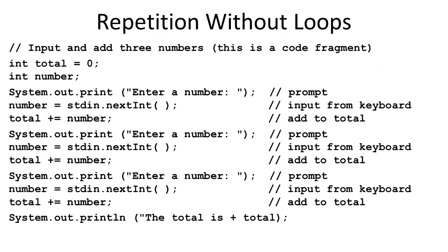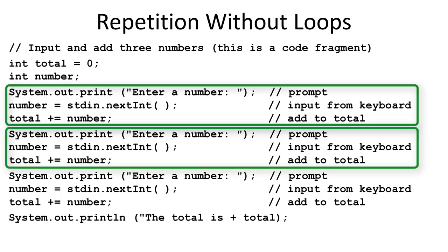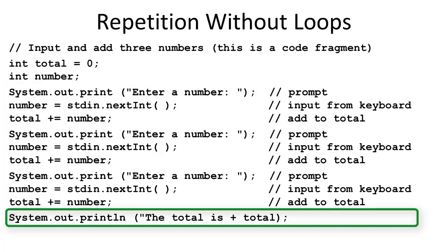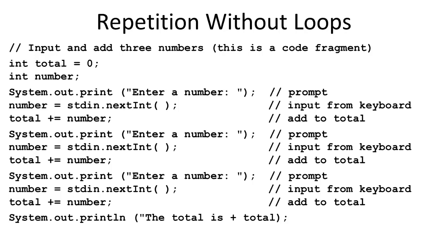Here is a program fragment — it is only a piece of a full program, missing all the extra things needed to make a program run. If you wanted to run this program fragment, you would need to add any needed import statements, the class statements, the void main statement, and any other open and close curly braces. Also needed are the statements to create the scanner object named stdin. This fragment inputs three numbers, one at a time, from the user and adds them to the variable total. After all three numbers have been processed, the total is displayed with the print line statement.